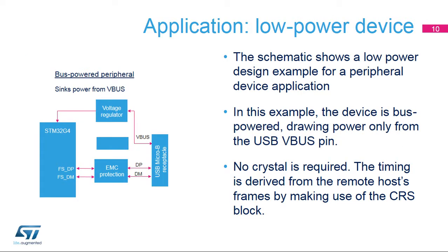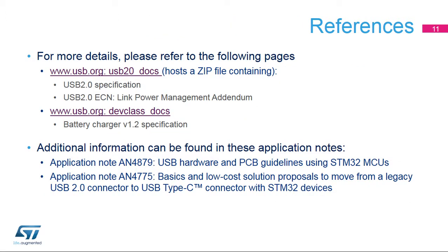Here is an application example of a low-power peripheral device. Power is drawn directly from the USB V-bus signal. No crystal is required. For complete USB specification documents, please refer to USB.org. The USB 2.0 document home page has a zip file containing the USB 2.0 and OTG 2.0 specifications and an Engineering Change Notice, or ECN, for Link Power Management, or LPM. The USB Device Class Documents page has the battery charger specifications. Additional information can be found in these application notes.